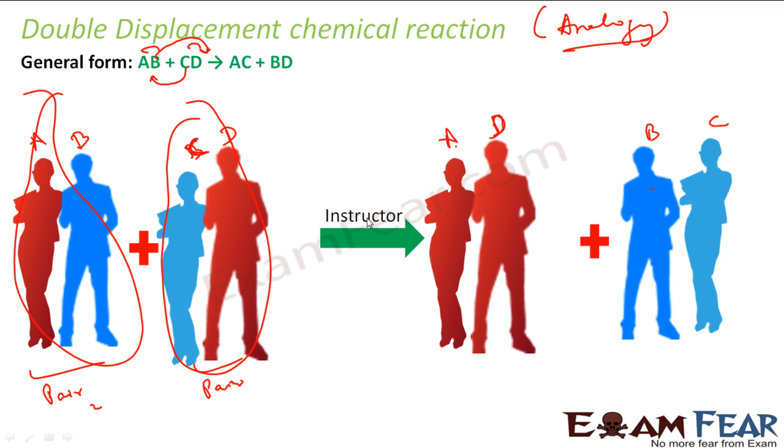So if you see now, from AB plus CD it becomes AD and BC. This is swapped. And these kind of reactions are called double displacement chemical reactions. So here I wrote AC and BD. I could have also written AD plus BC. It does not matter because anyway we are going for a swap. So in this case it is AD and BC. It swapped.